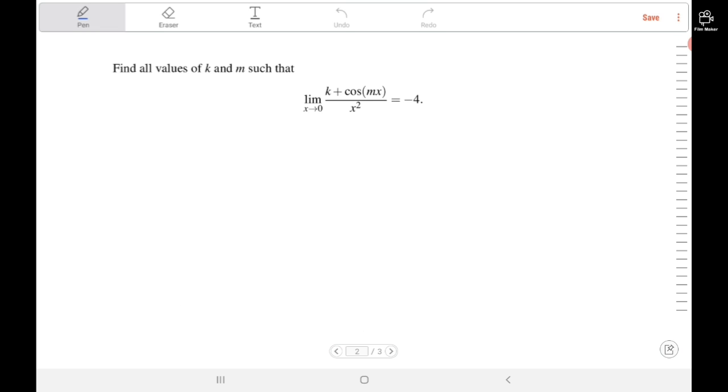Now we're going to do this through a specific example. We have the limit as x goes to 0 of k plus cosine of mx divided by x squared. The goal is to find all values of k and m such that this limit equals negative 4. So rather than just evaluating the limit, we're finding the values that make the limit give this specific value.